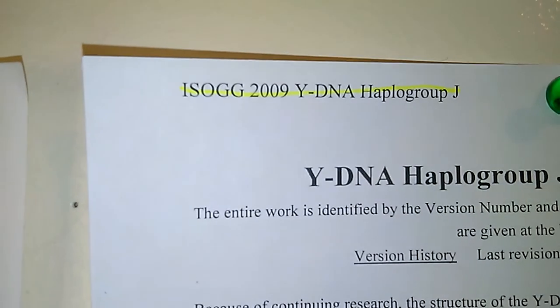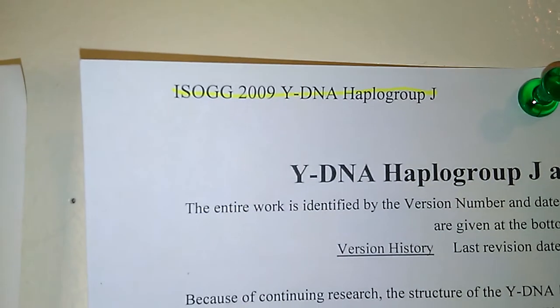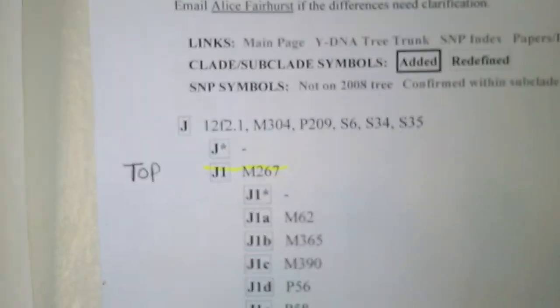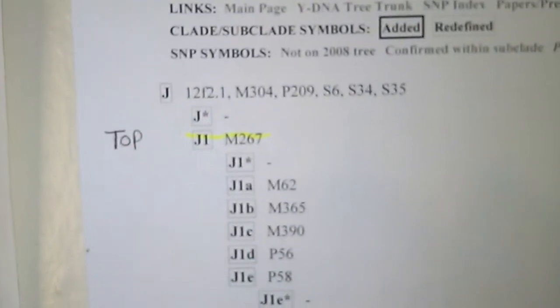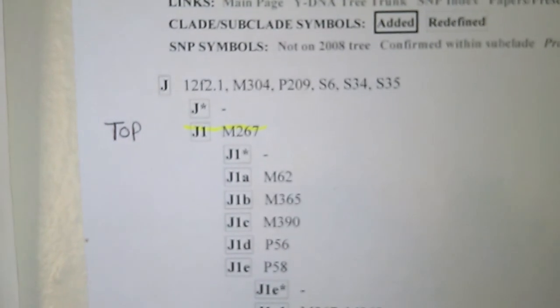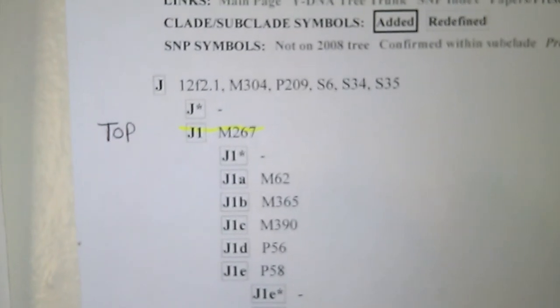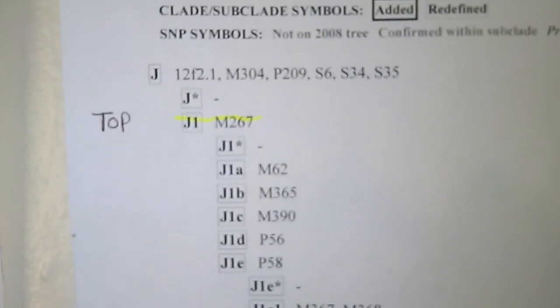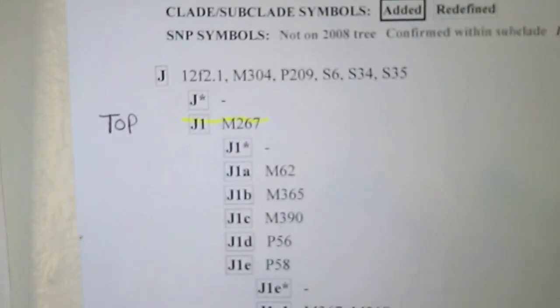Go to the International Society of Genetic Genealogy and you can see right there that J1 is defined by DNA marker M267. Everything lines up — it's right at the very top, it's the leader.